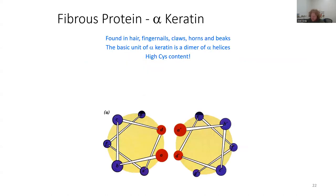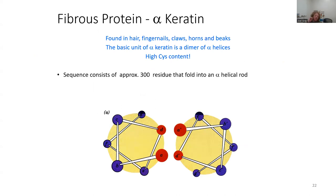Here we have a model of alpha keratin, found in hair, fingernails, claws, horns, and beaks. The basic unit of alpha keratin is a dimer of alpha helices. This dimer of alpha helices is very strong and has a large concentration of cysteine residues. These alpha helices are approximately 300 amino acids that fold into an alpha helical rod.